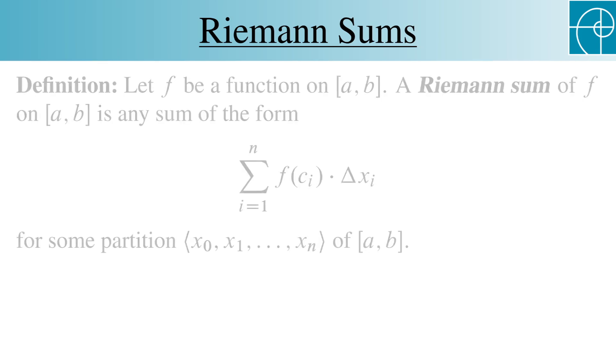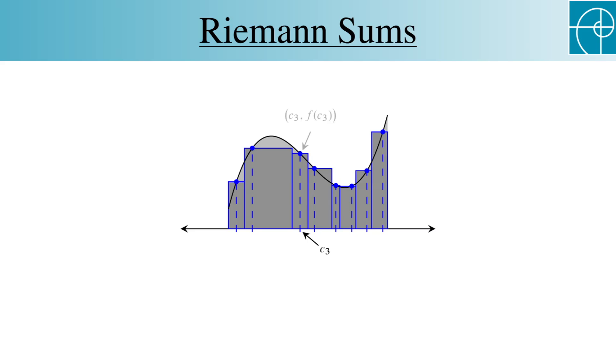Back once more to this graph. Let's choose a point in each subinterval and evaluate the function at those points. For example, here's c sub 3 and here's the point c sub 3, f of c sub 3. And this is the width of the second subinterval. So again, this sum is the sum of the areas of the rectangles. The delta x sub i's are the rectangle's widths and the function's values at the c sub i's are the heights.